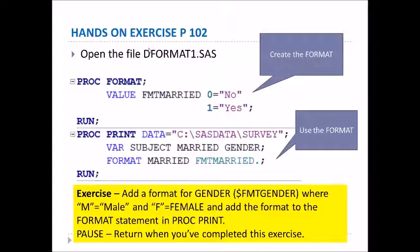Here's a hands-on exercise on page 102. Open up the file called d_format1.sas and notice that we're going to create a format called FMT_MARRIED — 0 equals 'no', 1 equals 'yes' — as we've seen before. Then we're going to use PROC PRINT to print out this information. Once you have created the format, you have to apply it.